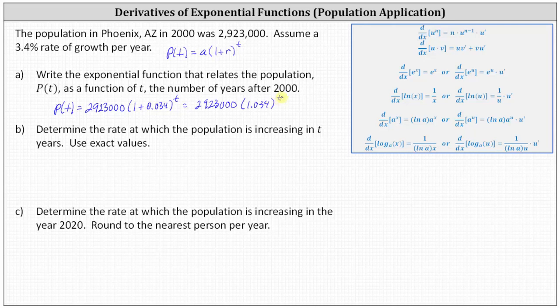Part B, we're asked to determine the rate at which the population is increasing in T years, and we're told to use exact values. This means we need to find the derivative function P prime of T. Notice P of T is an exponential function where the base is 1.034 and the exponent is just T, and therefore we can apply the derivative formula: the derivative of A to the power of X with respect to X equals natural log A times A to the power of X.